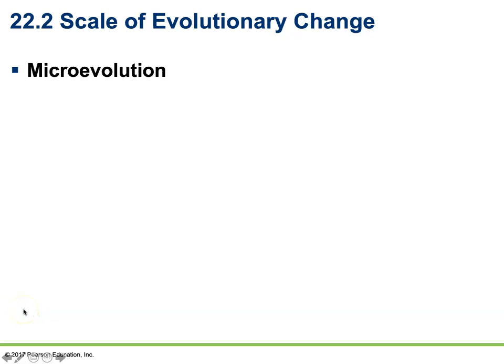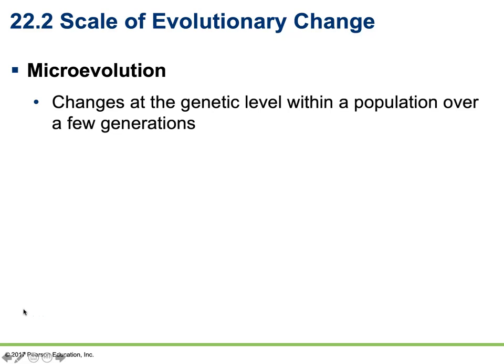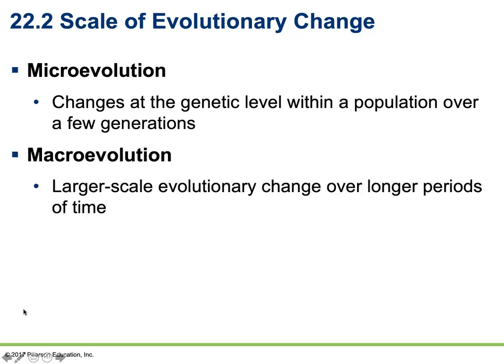When we're looking at the scale of evolutionary change, it's important to distinguish between two different phenomena known as microevolution and macroevolution. Microevolution involves changes at the genetic level within a population over a few generations. Another term for this is natural selection. This is an easily observable phenomenon since it occurs in such a short span of time. Macroevolution is much more difficult to observe and test — this is the large-scale evolutionary change that happens over longer periods of time, including things like the origin of new species and mass extinctions.